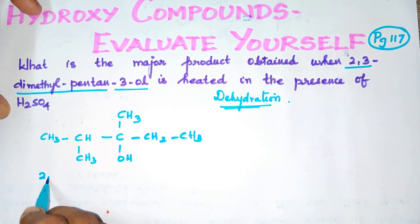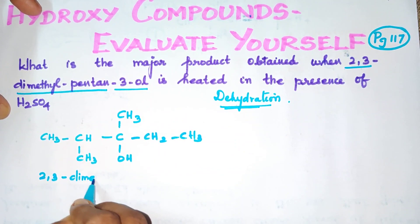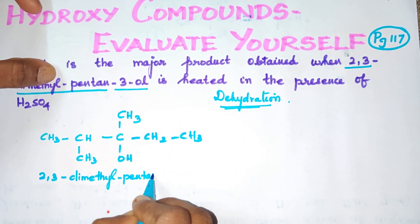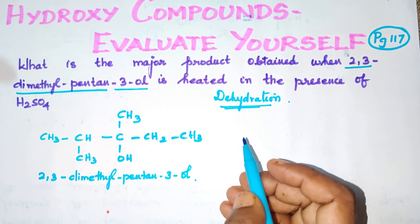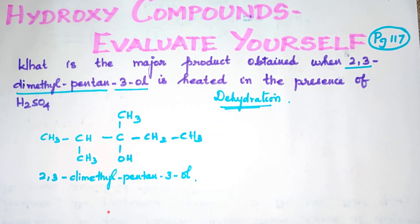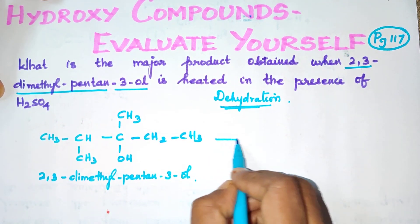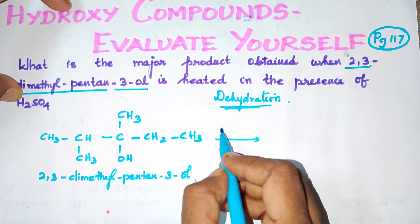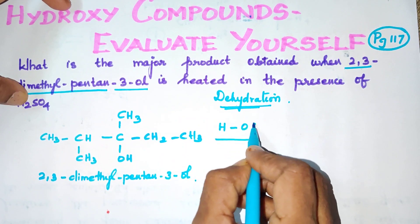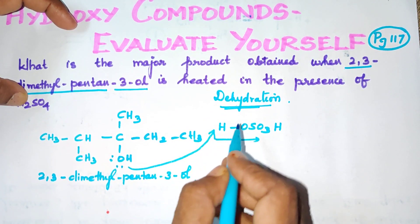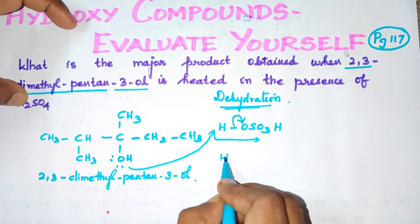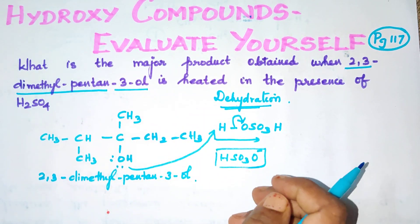This is 2,3-dimethylpentan-3-ol as given in the question. Now let's find the major product through the mechanism. In the first step, H₂SO₄ provides H⁺. The lone pair of electrons on the oxygen attacks the H⁺, forming a bond. This gives an oxonium ion, with HSO₄⁻ as the leaving group.